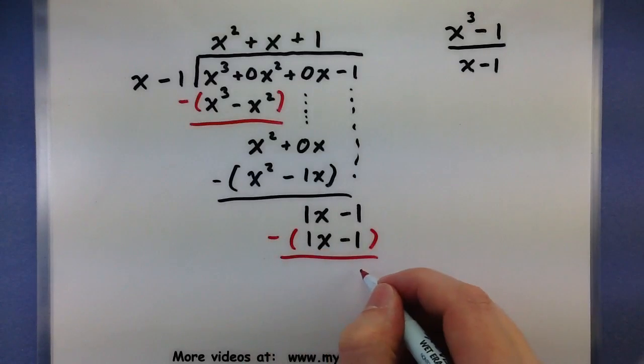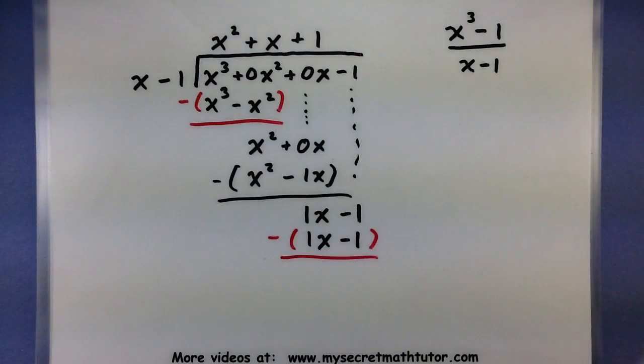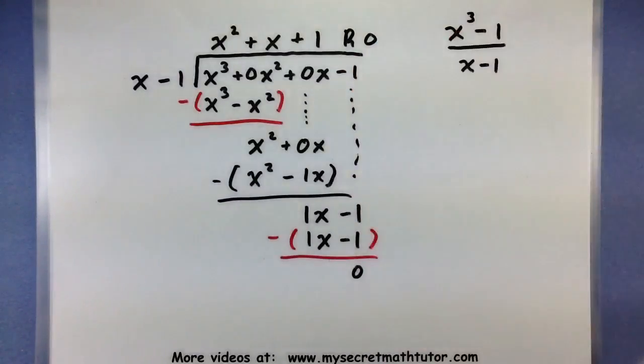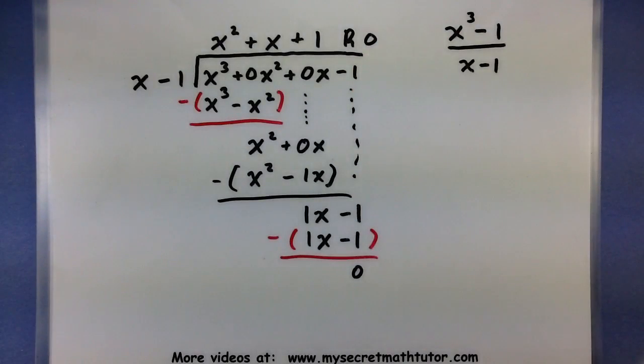And since these are exactly the same, it looks like we'll just get 0. In other words, we have no remainder, and it looks like it went in evenly. Awesome.